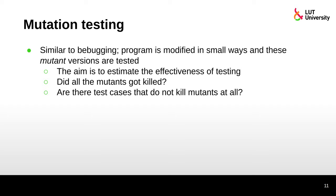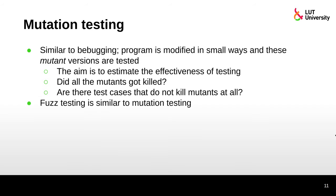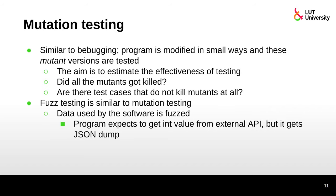We also ask: are there test cases that do not kill mutants at all? Why do we have those test cases — are they irrelevant? Should those test cases be removed? Fuzz testing is similar to mutation testing, but in this case the data used by the software is fuzzed. For example, a program expects to get an integer value from an external API but it gets a JSON dump — and then what happens?